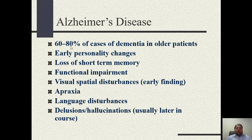There is functional impairment, and visuospatial disturbances are an early finding in Alzheimer's disease. For example, a patient who has been going to the mosque daily for 10 to 20 years may forget the way back home or forget the way to the mosque — an example of impaired visuospatial orientation. Apraxia refers to the patient's inability to perform skilled movements. Language disturbances include difficulty naming objects.